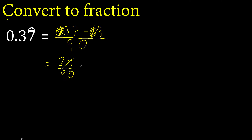Subtract. This can be simplified because both can be divided by the same number. Divided by 2: the result is 17 over 45.